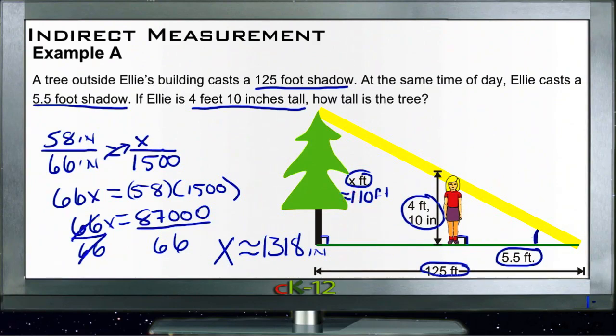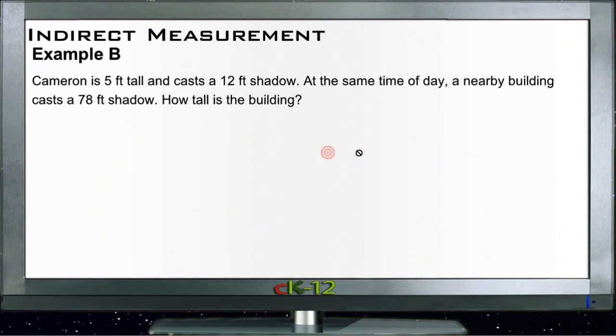Alright, example B. Example B says Cameron is 5 feet tall and casts a 12-foot shadow, and at the same time of day, a nearby building casts a 78-foot shadow. We want to know how tall the building is. So this is again a very similar question.